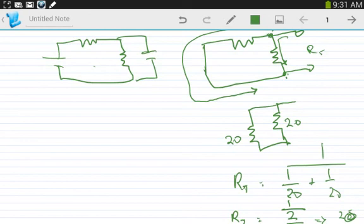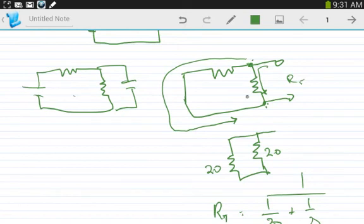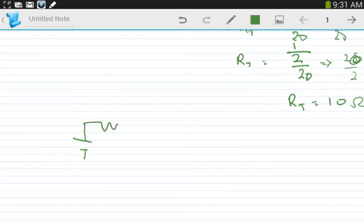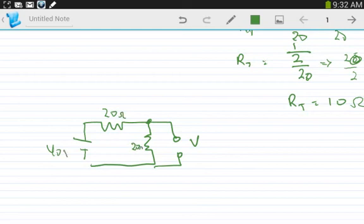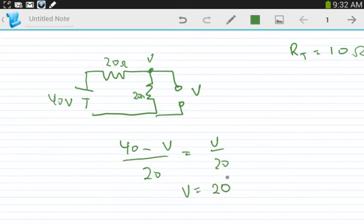Now we need to get the voltage at that point. Get back to the original circuit. We need to solve for the voltage here, which is the voltage here. Solving for V: 40 minus V over 20 equals V over 20. We solved for that: V equals 20 volts.